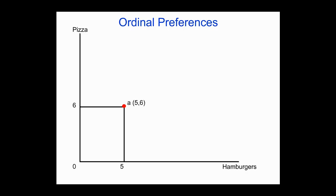Here we have pizzas, measured in slices, and hamburgers, measured by number. You could have different varieties of goods — we're using just two goods here. We could also use hamburgers and all other goods measured by income on the y-axis where pizza is. Let's start off with an initial bundle of six slices of pizza and five hamburgers — this is point A on the slide. What we then do is look at this initial endowment and see how other endowments might be better or worse than it.